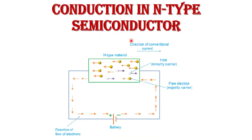Now, conduction in N-type semiconductor. In an N-type semiconductor there are a majority of free electrons. The yellow circles indicate the minority carrier holes, so both majority carrier electrons and minority carrier holes are present. When we apply an external voltage, the free electrons move toward the positive terminal of the battery and holes move toward the negative terminal. Since the population of free electrons is greater than holes in an N-type semiconductor, free electrons are called majority carriers, and conduction is mainly due to the motion of free electrons.